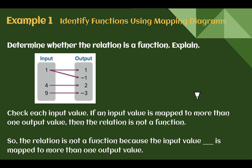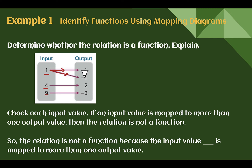Example 1: Identify functions using mapping diagrams. Determine whether the relation is a function — explain. We're given a mapping diagram showing inputs pointing to outputs. We need to check each input value and make sure it's only pointing to one output. Right away we can see that 1 goes to 1 and 1 goes to negative 1. So we have an input of 1 mapped to more than one output. This is not a function.